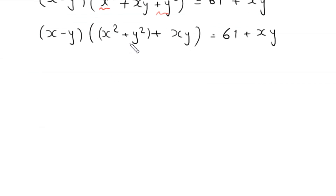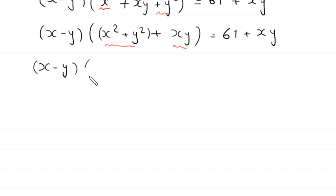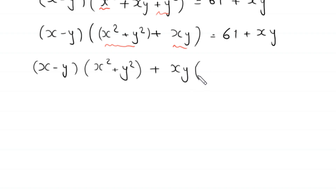Now we have two terms in this bracket: x squared plus y squared is one term, and xy is another term. So we multiply x minus y by each term: x minus y times (x squared plus y squared), plus xy times x minus y, is equal to 61 plus xy.